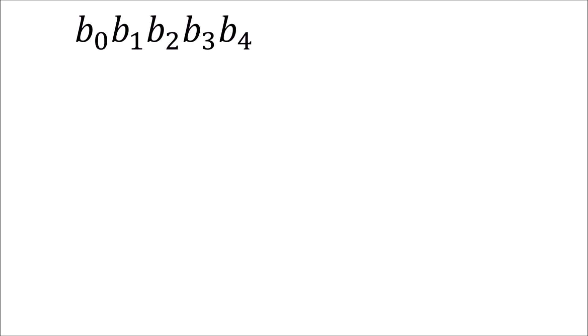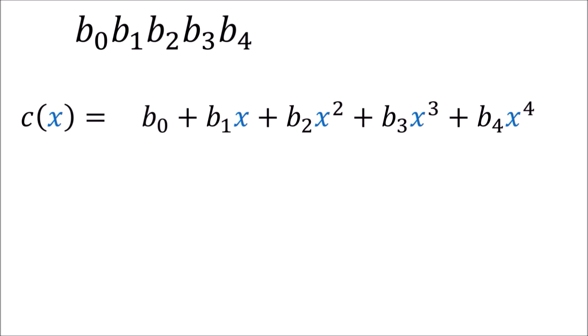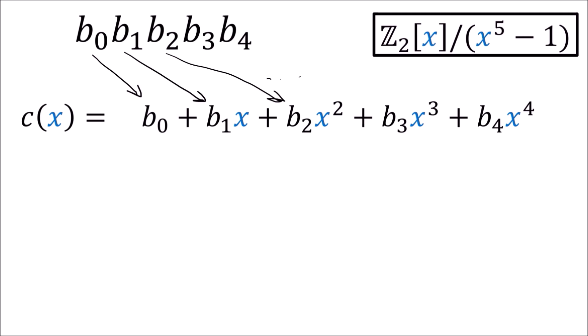Let's take a five-digit binary codeword with digits b0, b1, b2, b3, and b4. Recall that this can be represented by the polynomial c(x), where the polynomial coefficients are just these same digits b0 through b4. This polynomial lives in the set of polynomials in x with coefficients in the integers mod 2, meaning the coefficients are binary — either 0 or 1. And we're taking the polynomials mod x^5 minus 1.